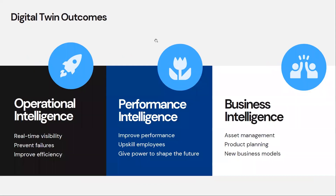The three common types of business outcome are on the operational side, performance side, and business side. On the operational side, you get real-time visibility into your physical assets and systems. You want it to prevent failures and improve efficiency in manufacturing, typically requiring real-time or near real-time intelligence. On the performance side, it's about improving the performance of your personnel — using data to guide them to be more efficient, better at what they do, and to reduce errors.